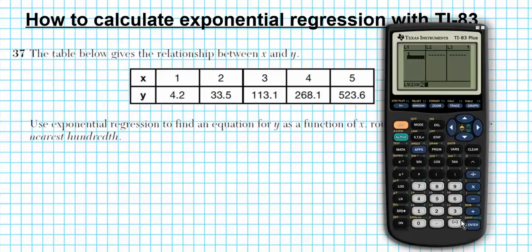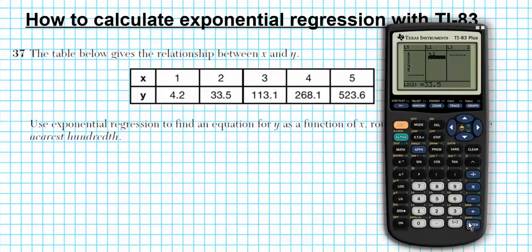So enter 1, 2, 3, 4, 5. There's another way of entering values into the lists in the calculator, but that method is a little bit more complicated. This is more effective because you're less likely to make mistakes since everything is organized nicely in tables. So we have 4.2 for the first Y entry, 33.5, 113.1, 268.1, and then the last entry is 523.6.